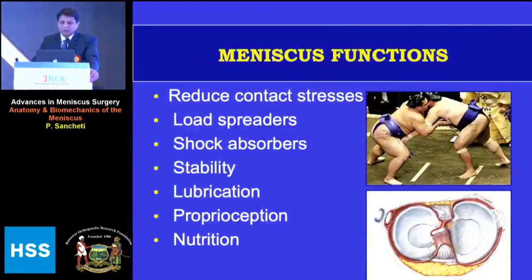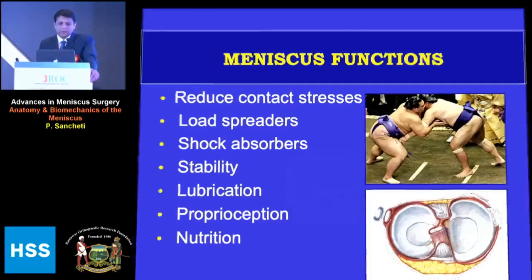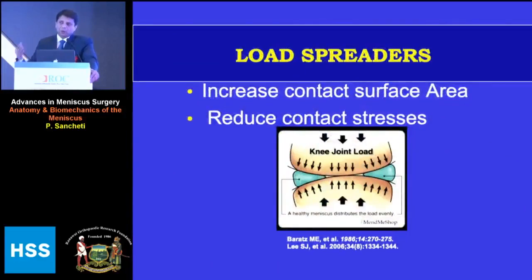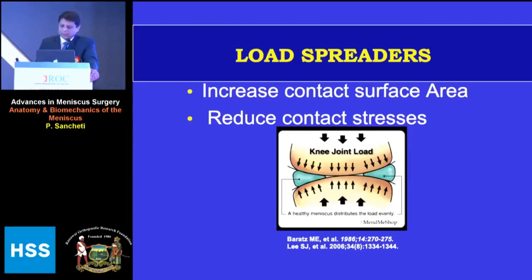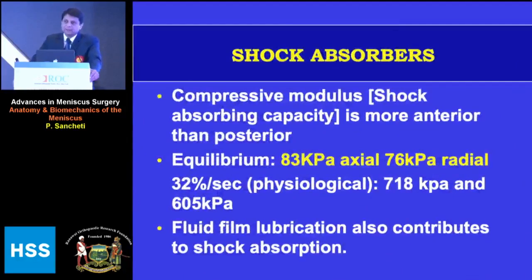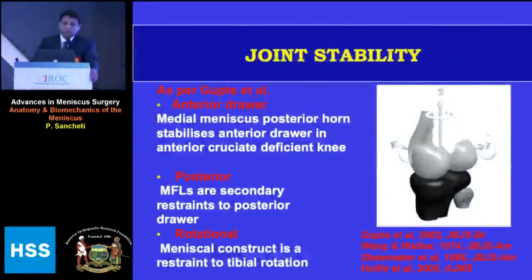The important functions of the meniscus include load spreading. The meniscus increases contact surface area and reduces contact stresses, with the lateral tibial contact being concave and the medial being convex. This helps in congruity and also in shock absorption. Once the meniscus is removed, contact surface decreases and thereby makes the joint more prone to osteoarthritis.